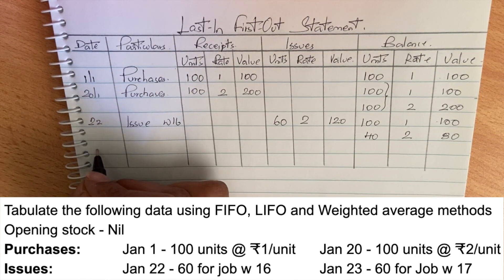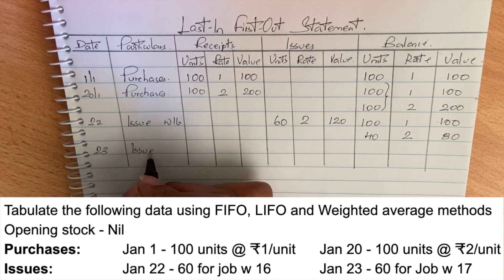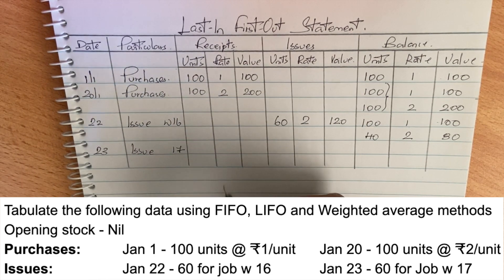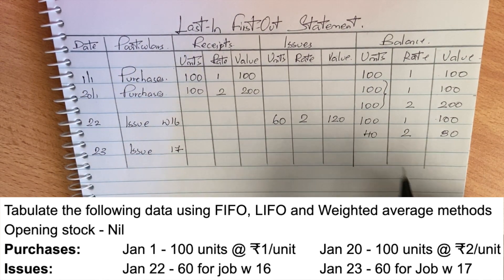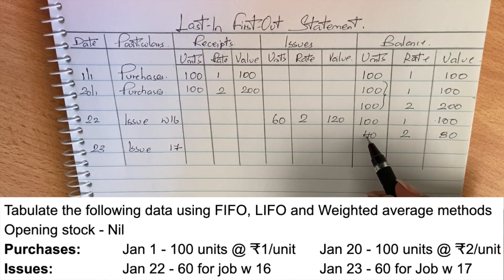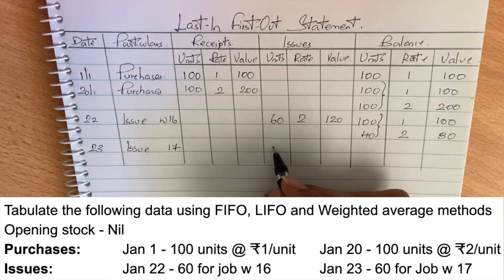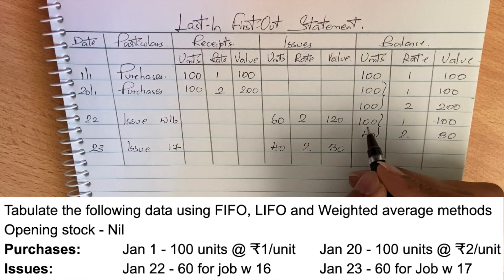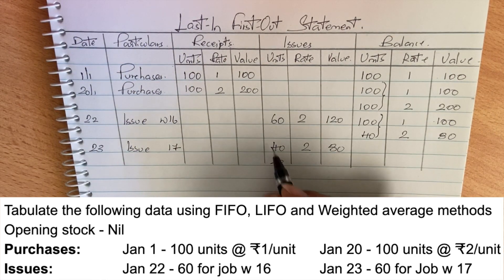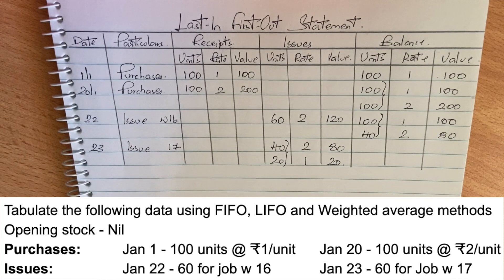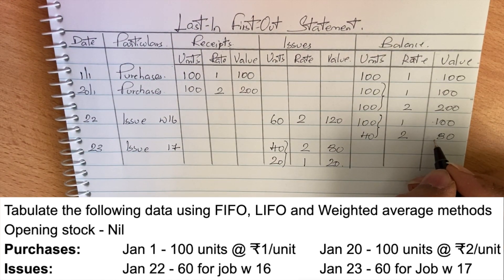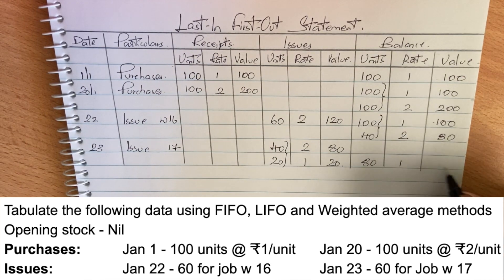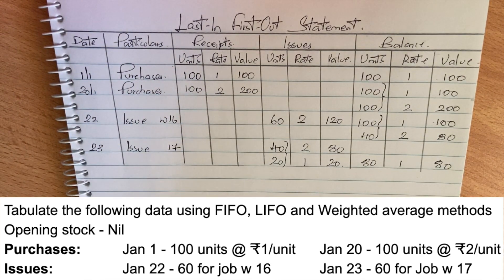Next, January 23rd, issue to job 17. Under LIFO, 60 units are to be issued. The remaining 40 units from the last lot at rate 2 are issued first: 40 into 2 = 80. The remaining 20 units are taken from the first lot at rate 1: 20 into 1 = 20. Total issue = 80 + 20 = 100. Closing stock balance is 80 units at rate 1, value 80.